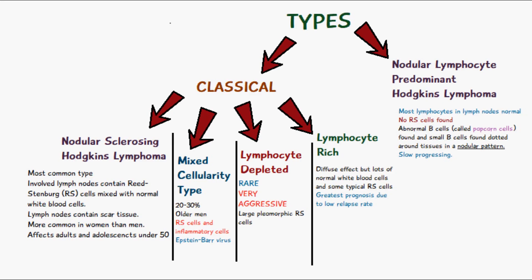The lymphocyte depleted type is very rare and very aggressive. It consists of large pleomorphic Reed-Sternberg cells.